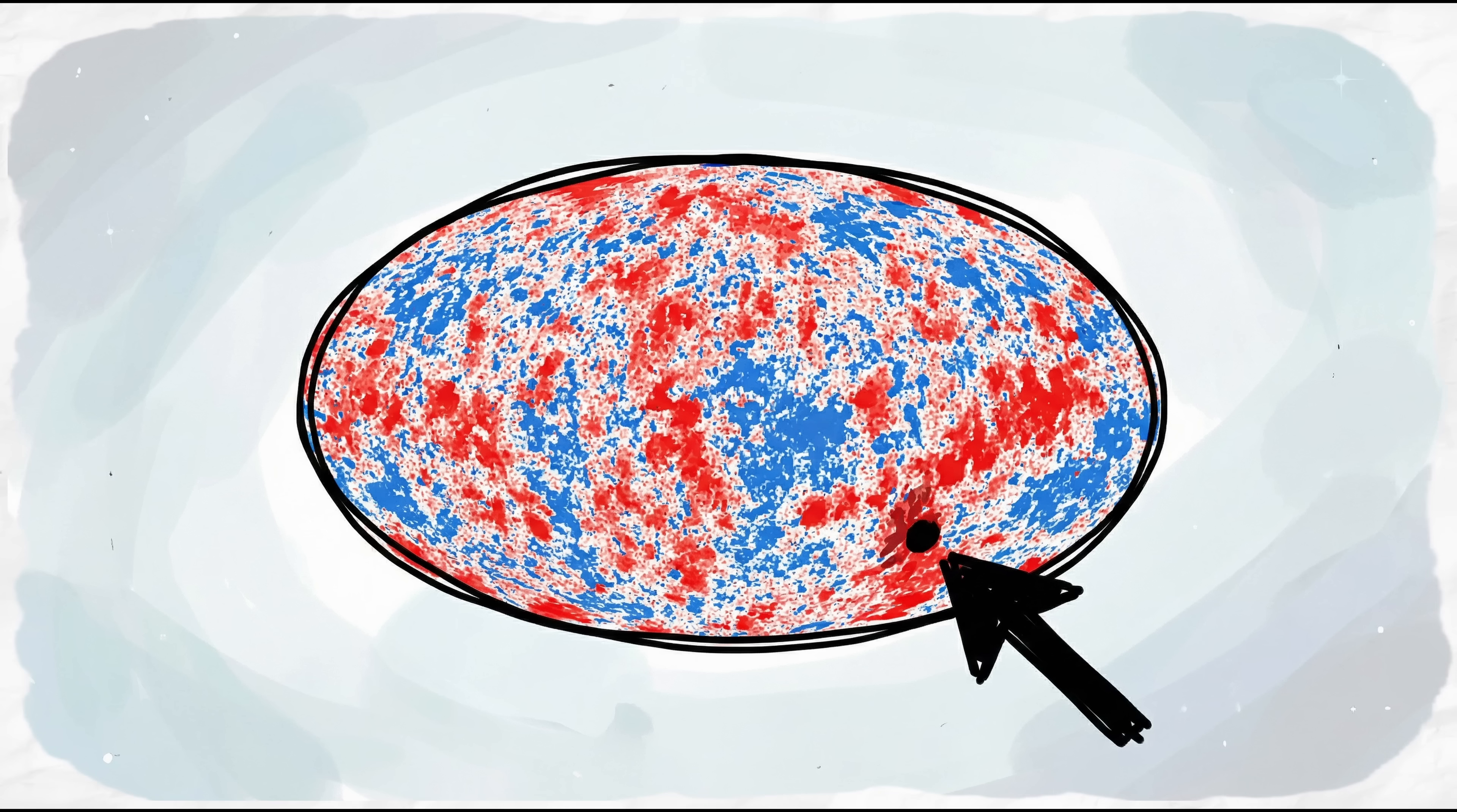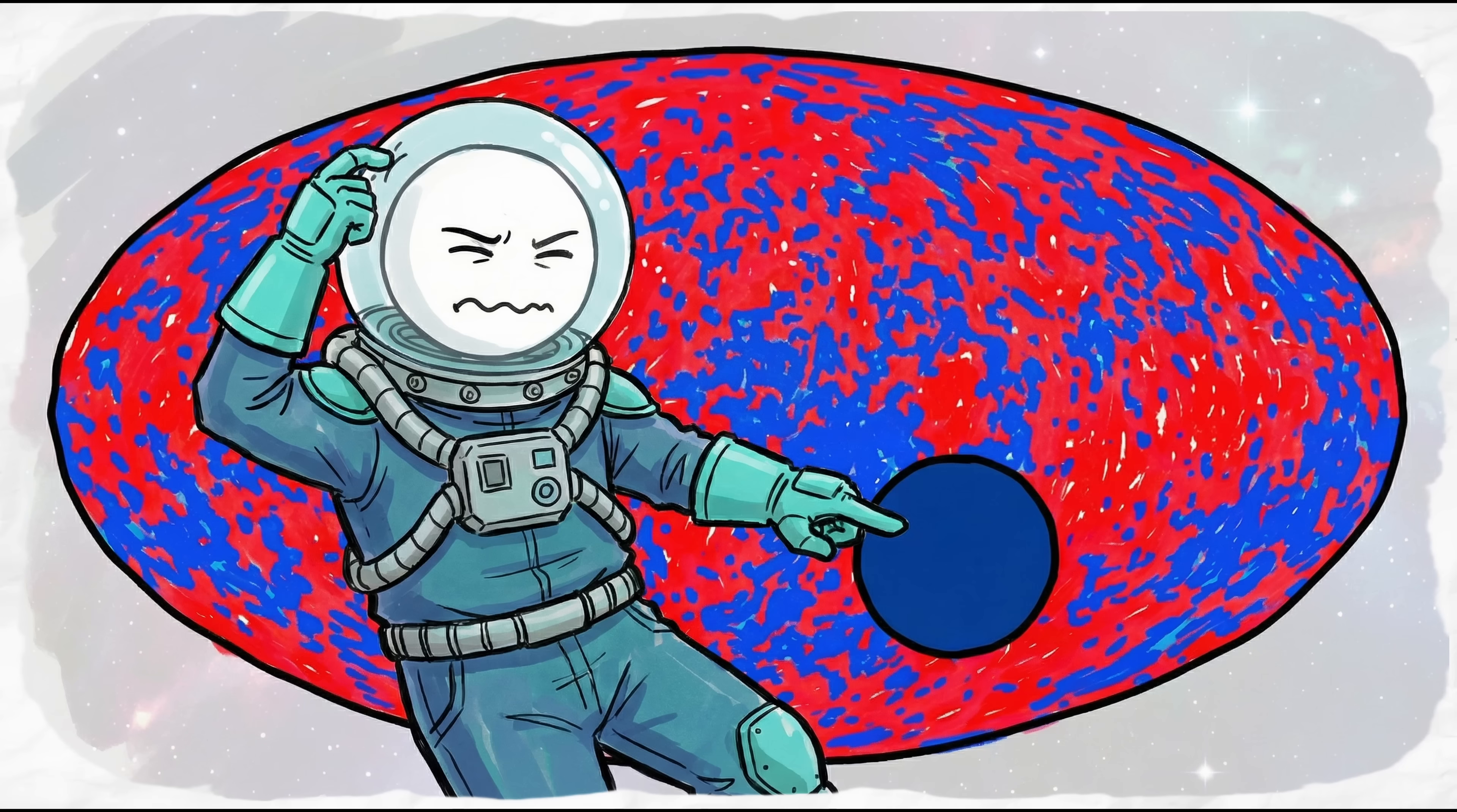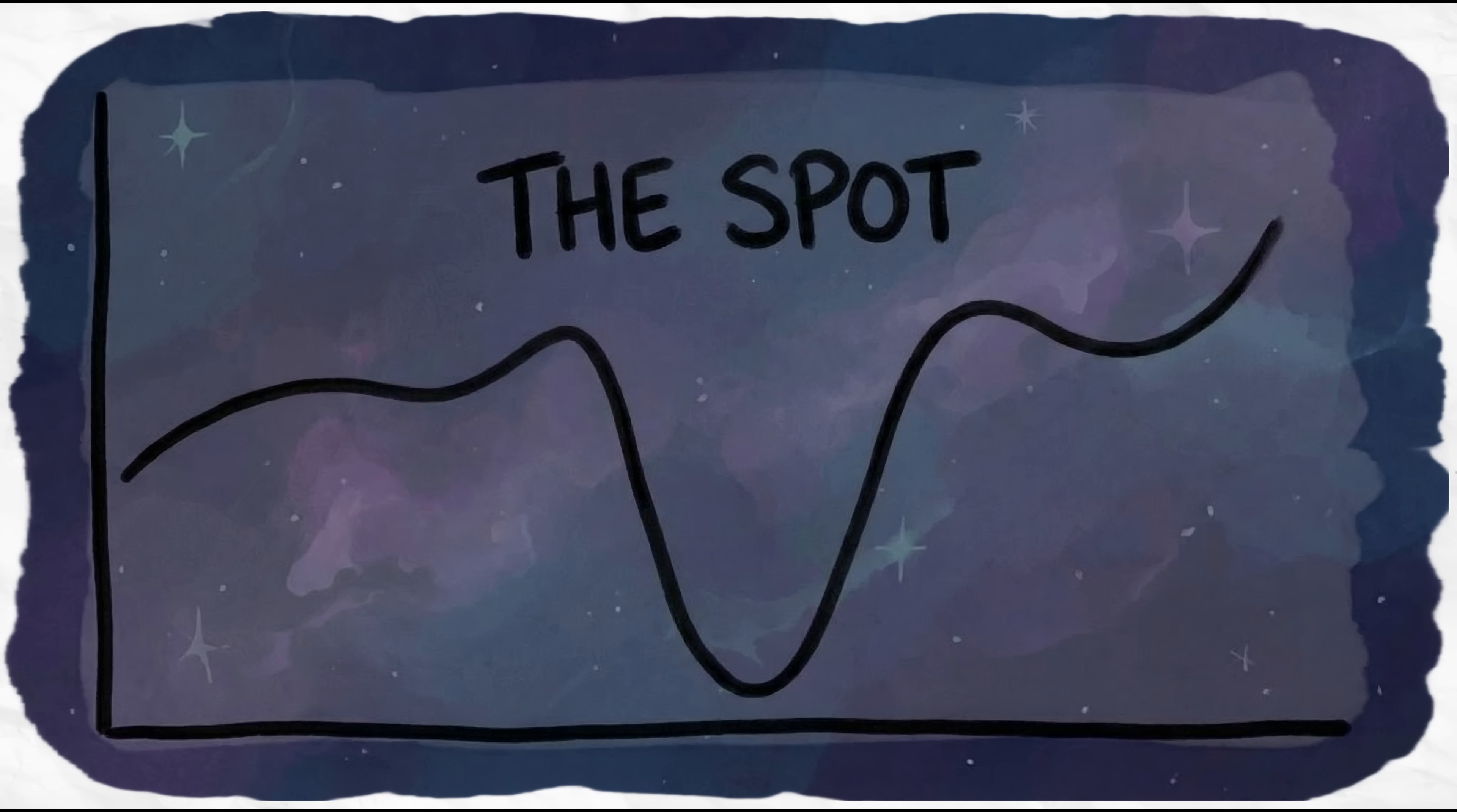Way down in the southern sky, there's this thing called the CMB Cold Spot. It's a giant patch that is way colder than everything around it. It shouldn't be there. Everything we've learned about the early universe says the temperature should fluctuate a bit. Sure, but not like this.